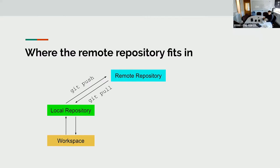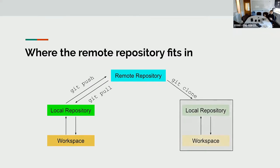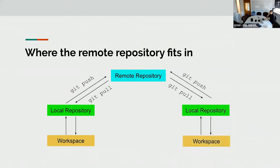Once we have a remote repository, we can use the command git clone to create a new workspace and local repository automatically. That will be a complete clone of the original one, and we can again use git push and git pull to interact with the remote repository.